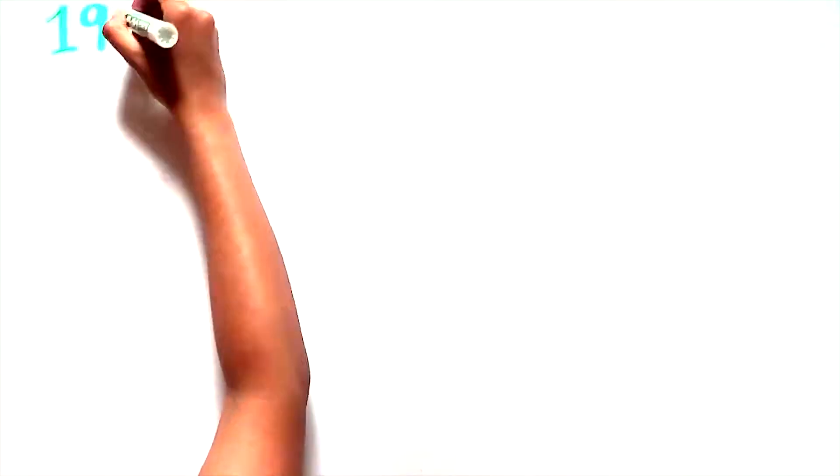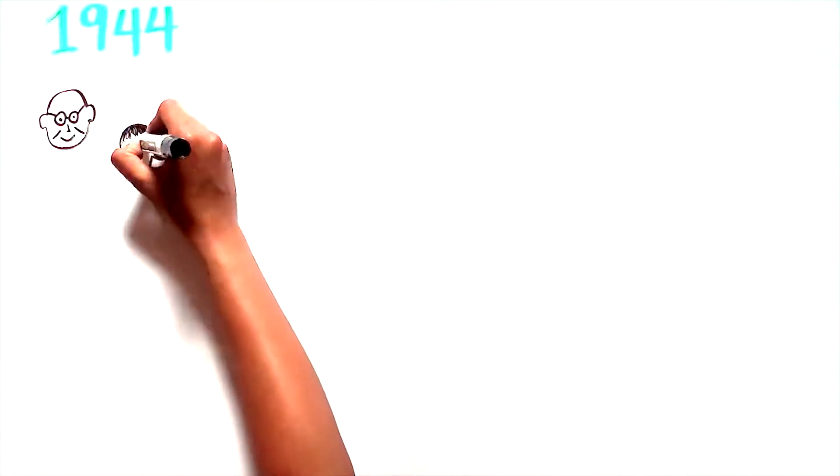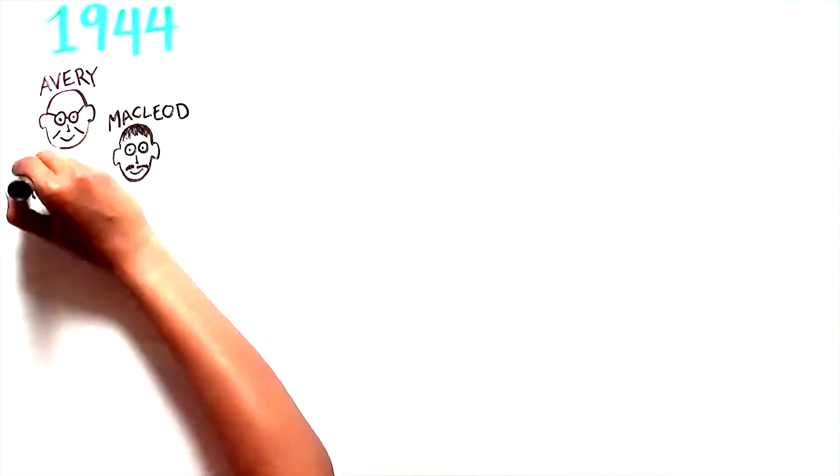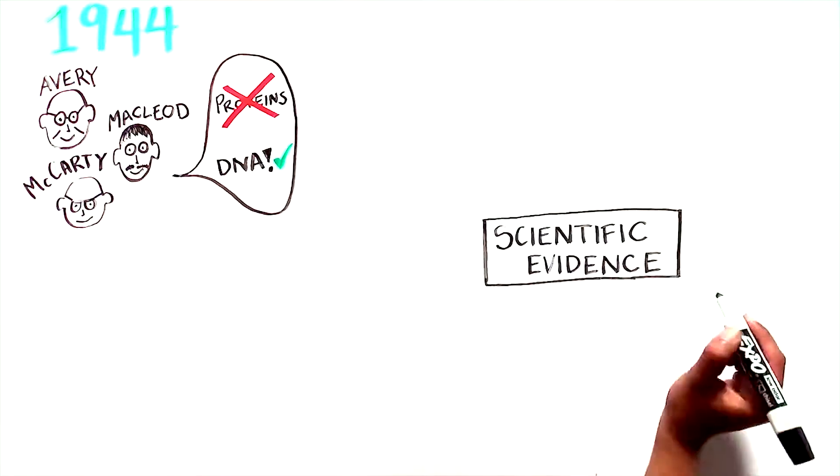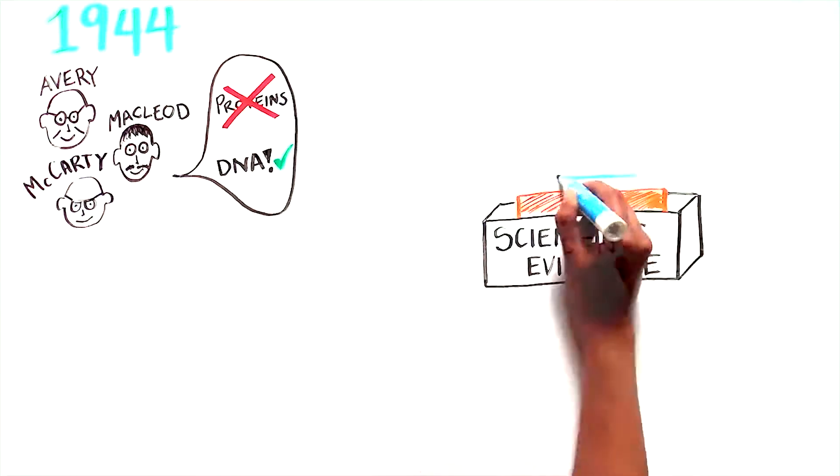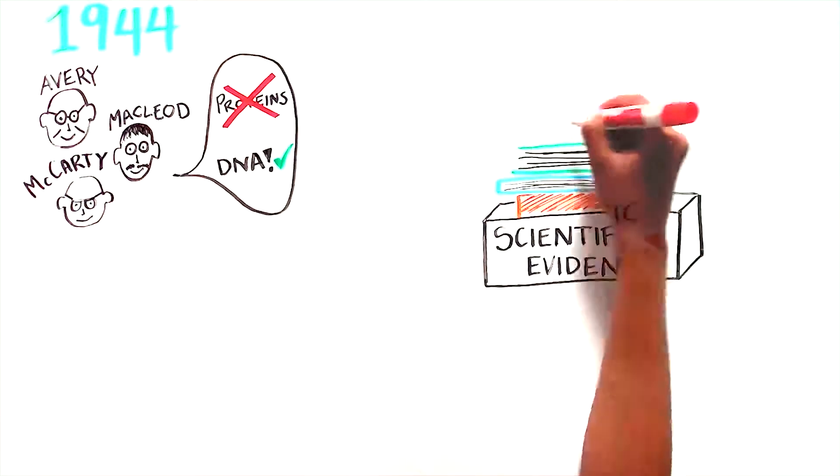An experiment by Avery, McLeod, and McCarty in 1944 first suggested that proteins were not responsible for heredity, as previously thought, and instead DNA was the culprit. However, given that their results flew in the face of the current thinking, not everyone was convinced.